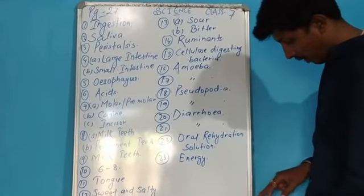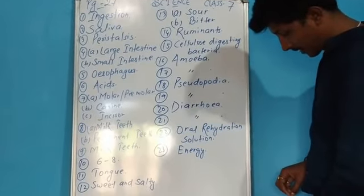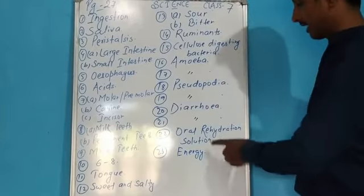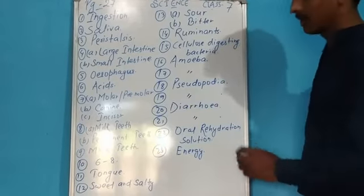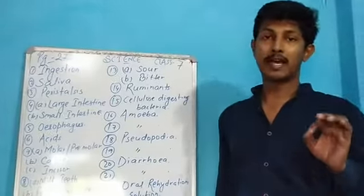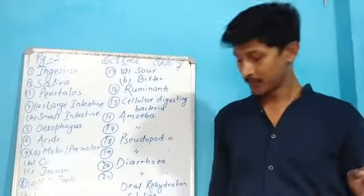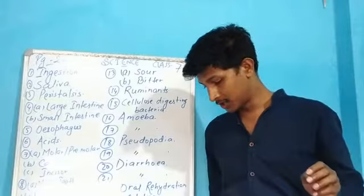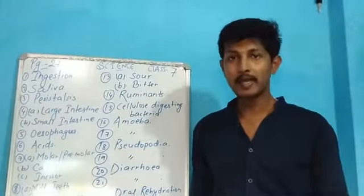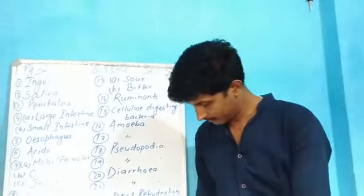And the last one: what happens when glucose breaks down in the body cells with the help of oxygen? Energy is formed. So students, your very short Q&A has been completed. Its short questions will be discussed in the next class. Till then, goodbye and take care.